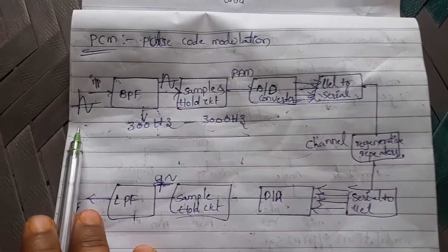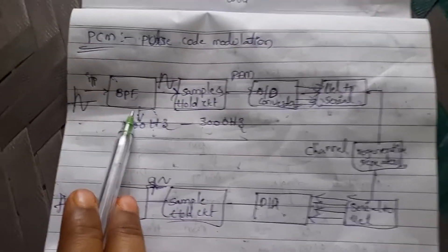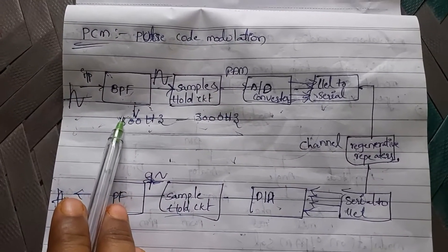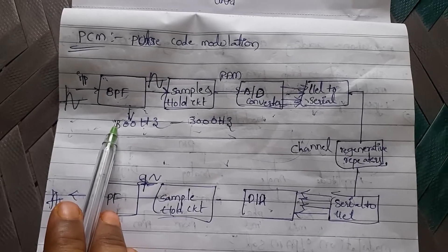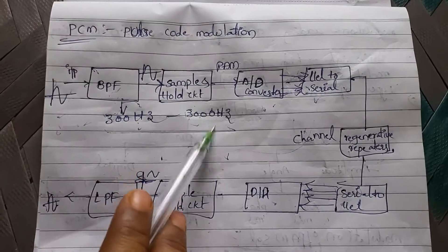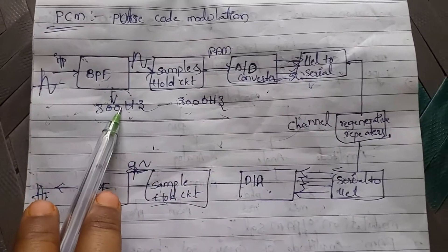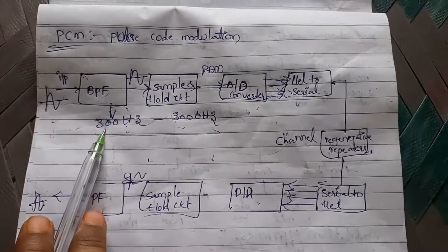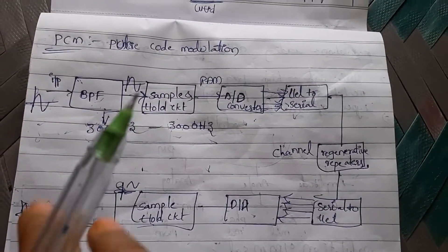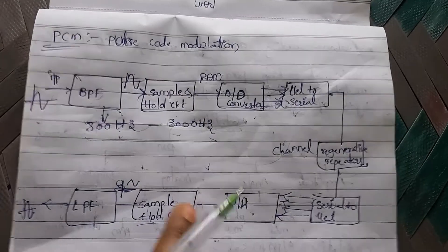The input is a normal analog signal — that is, a continuous time and continuous amplitude signal — which is given to the BPF. The Band Pass Filter allows only a certain range of frequencies, specifically 300 Hz to 3000 Hz, filtering the signal into that range.